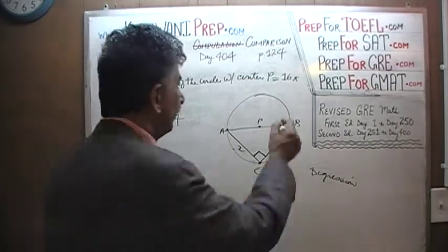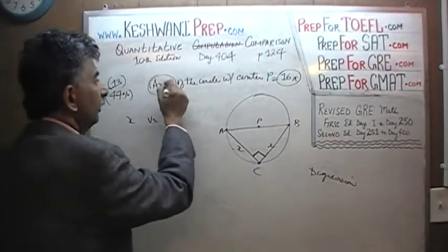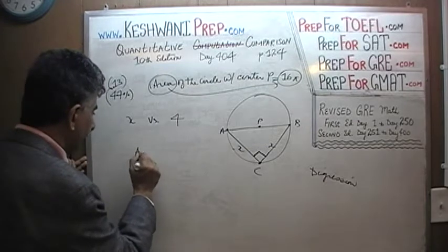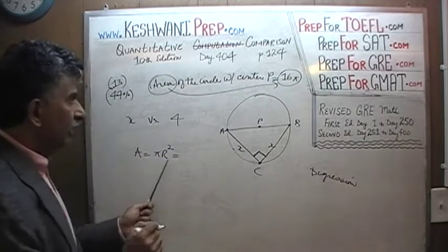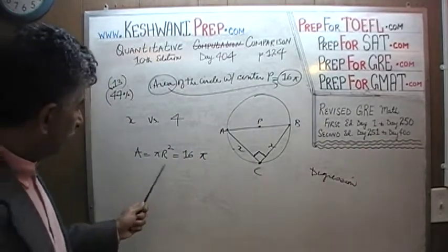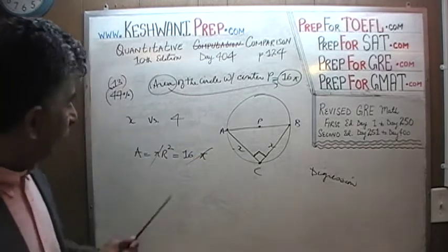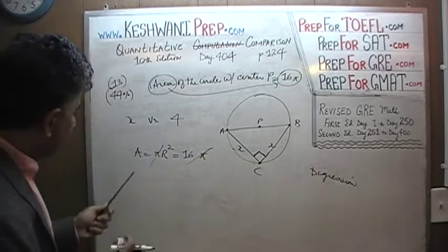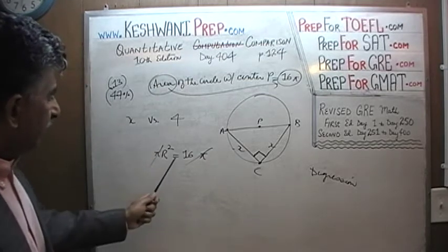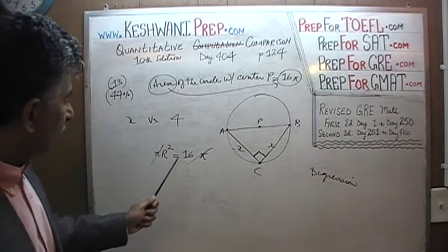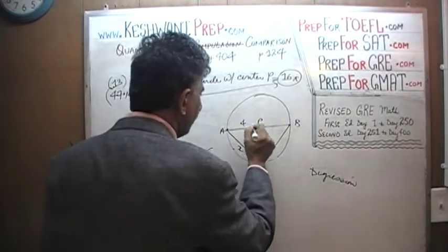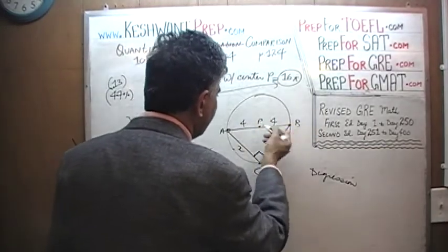That part comes from the area information. We know the area is 16 pi. The area of a circle is pi R squared, and pi R squared equals 16 pi. Dividing both sides by pi, we find that R squared equals 16, which means R equals 4. So the radius is 4 on each side, which means the diameter from A to B is 8.